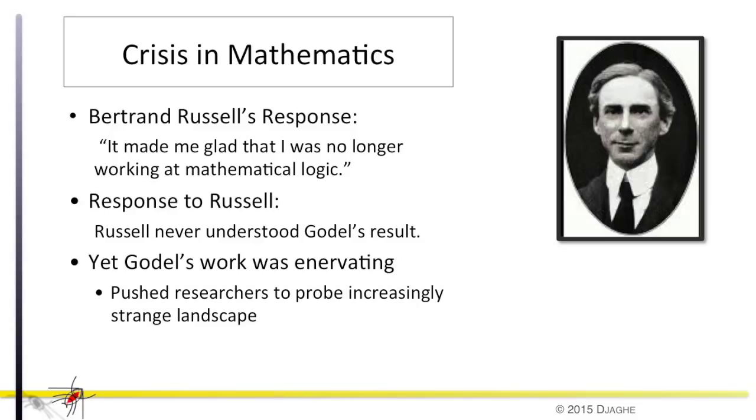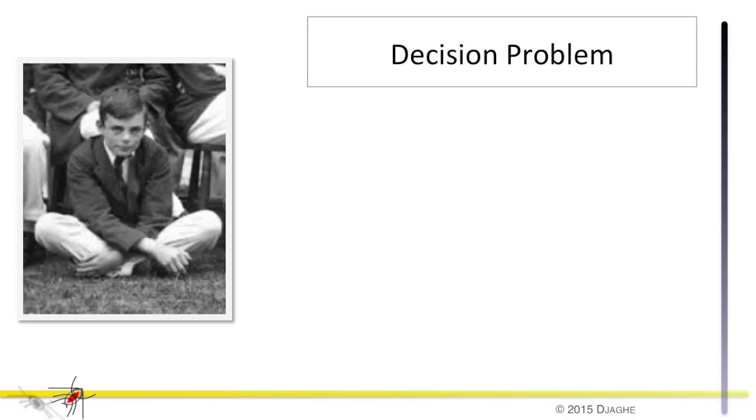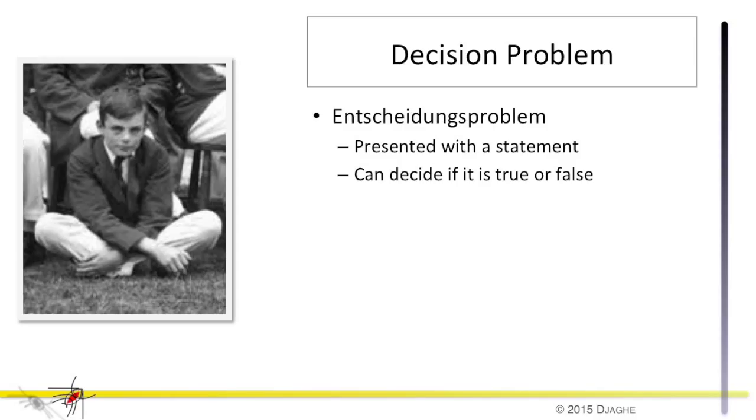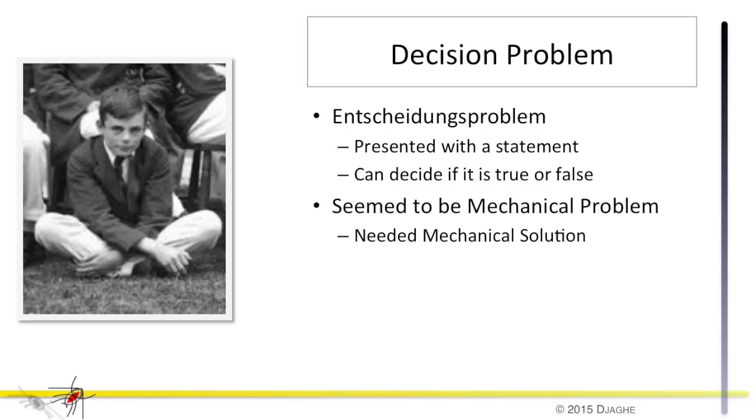In this crisis, Turing decided to look at the decision problem that is generally known by its German name, the Entscheidungsproblem. This problem is if you are presented with a mathematical statement, you can determine if it's true or false. This, at some level, seems to be a mechanical problem. You need a machine that can take a statement and provide a mechanical solution. Now, from the intellectual context, let's look at the practical context.